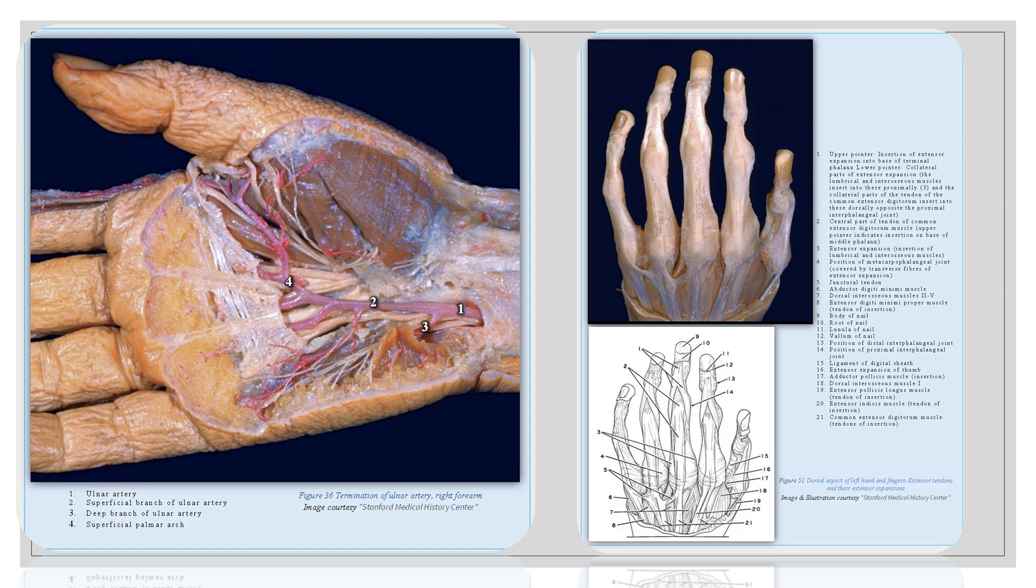This left side image shows the superficial palmar arch nicely dissected with their branches and in relation to the nerves of the palm of the hand and intrinsic muscles of the hand, given clearly in this dissection image. This right side image shows the extensor expansions. You can nicely appreciate this illustration image, same as the dissection image, in which all the extensor tendons of the forearm are inserted. If students can see like this, both together, instead of simply one diagram, it will be evergreen in their minds, I hope.